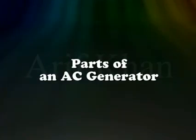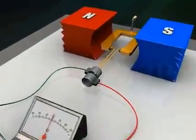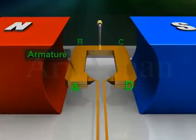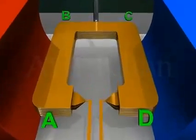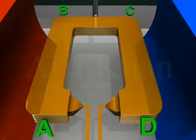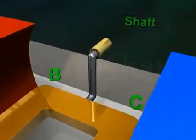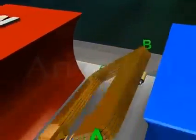Parts of an AC generator: an AC generator has an armature ABCD. It is a rectangular coil with many turns wound around a soft iron core. It also has a shaft, which can be rotated rapidly.